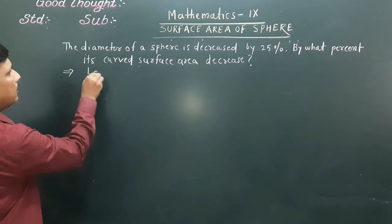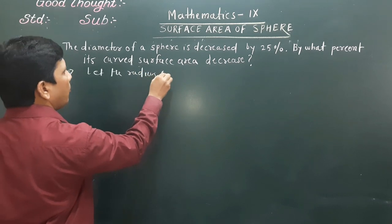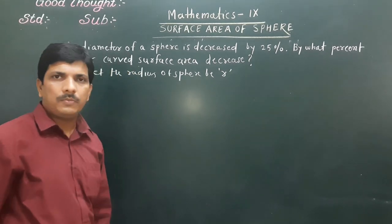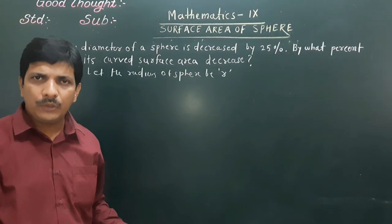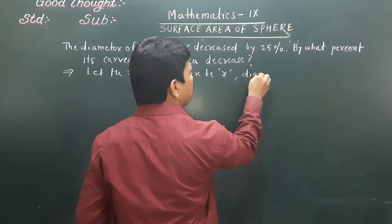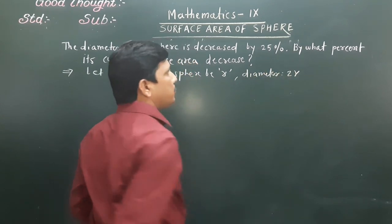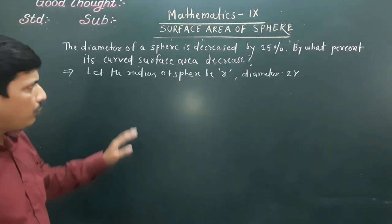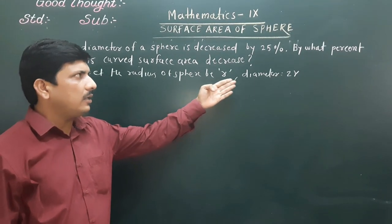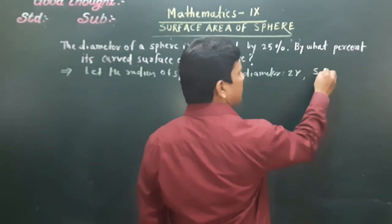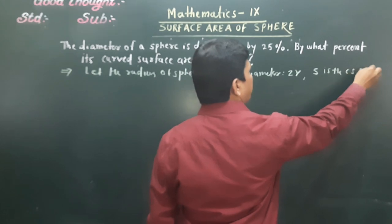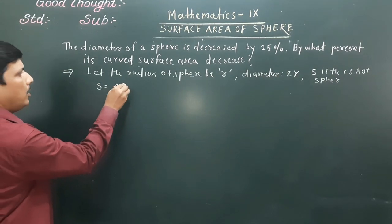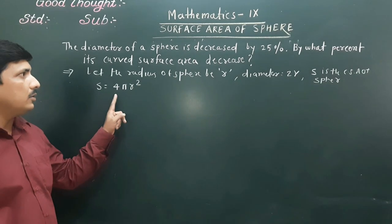Let the radius of the sphere be R, so the diameter is 2R. Let S be the curved surface area of the sphere. S = 4πR². This is our first equation — when the radius is R, the curved surface area is 4πR².